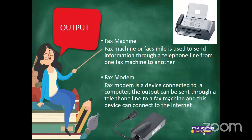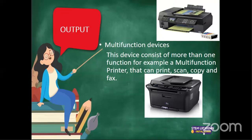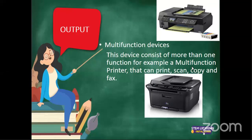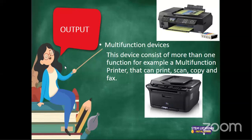We've got a multifunctional device that can also be an output device. Yesterday we spoke about this as an input device where you can use the scanner functionality embedded within it — that is why they say it is multifunctional; it has got more tasks. This device consists of more than one function — for example, a multifunctional printer can print, scan, copy, and fax. There are so many functionalities embedded within this single machine. Because of the functionality of printing — when you print, you convert your soft copy into a hard copy — it becomes an output device in that instance.